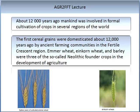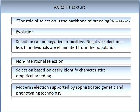Dennis Murphy stated that the role of selection was the backbone of breeding. When we think of breeding, the first thing that may come to mind is evolution. All creatures have evolved to abiotic — the non-living part of the environment — and the response to these factors has driven selection. This sort of selection tends to be a negative one; that is, less fit individuals are eliminated from the population.